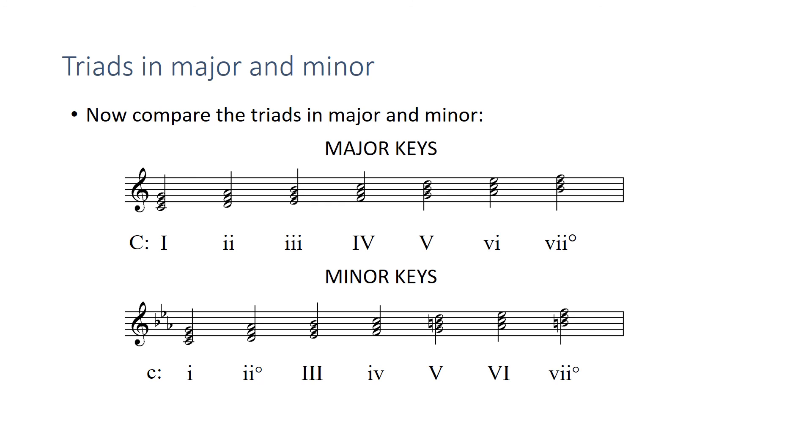Most of the other ones are going to switch qualities. So if you compare one and one, the major one becomes a minor one in minor, the minor three in major becomes a major three in minor, the major four becomes a minor four, and the minor six becomes a major six. So those all switch qualities. Remember though that the two in major keys becomes a two diminished in minor keys, so that one's a little bit different.